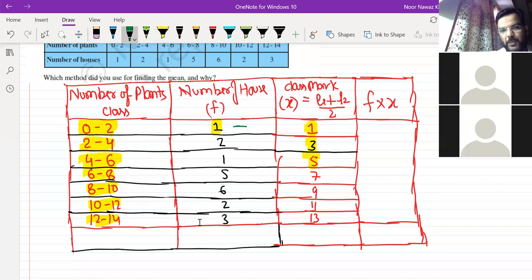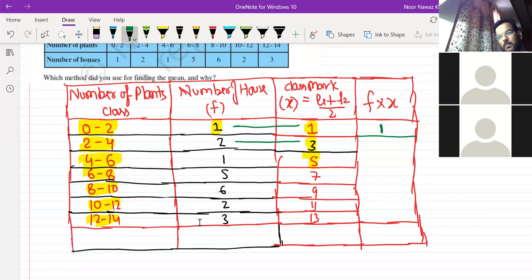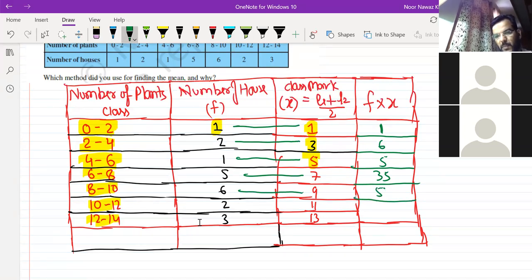Multiply both, what is 1 into 1? 1. In the other line, how much f and x? 2 and 3, 6. And then 1 into 5 is 5. 5 into 7 is 35. 6 into 9 is 54. And 2 into 11 is 22. And 3 into 13 is 39. So this is fx.